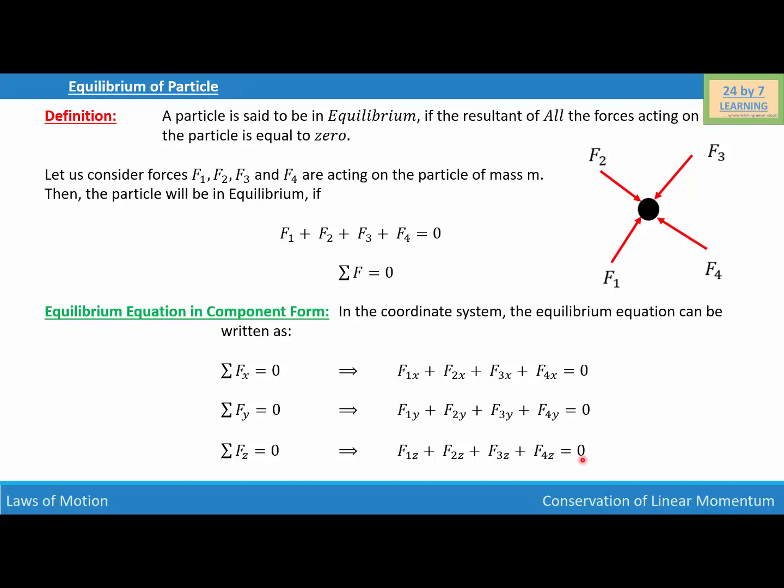In other words, if a particle is in equilibrium, then the sum of the forces along the X, Y, and Z axes will also be equal to zero. And this is how we define equilibrium of particles.